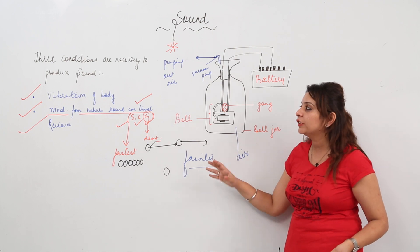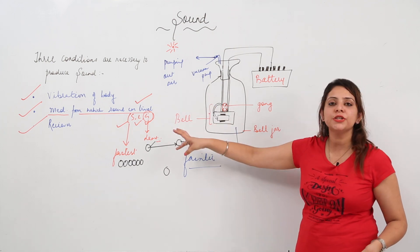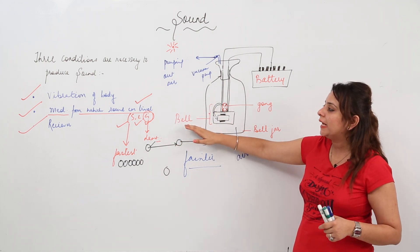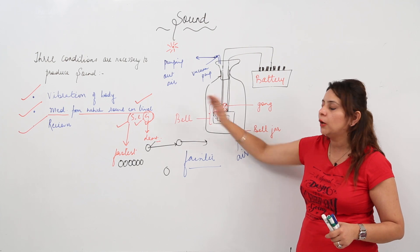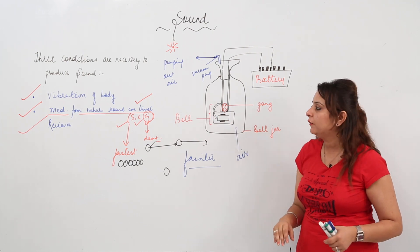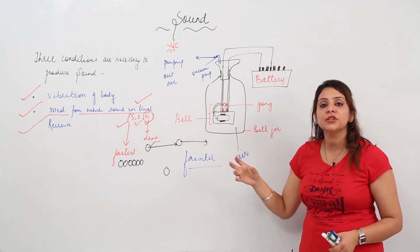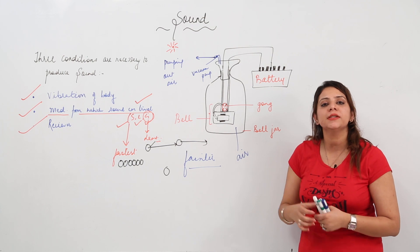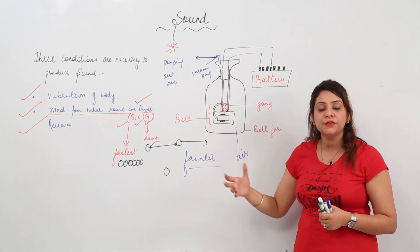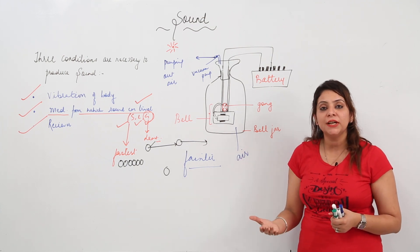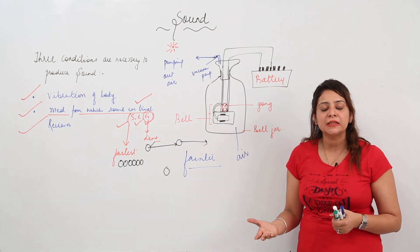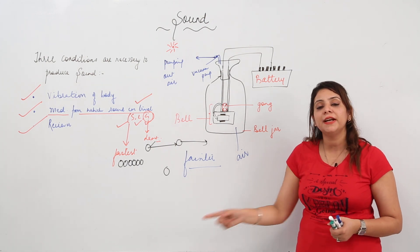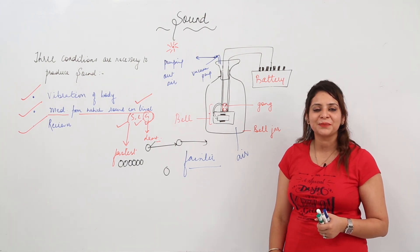Sound travels faster in solids compared to gas because particles are more closely packed. So the three conditions to produce sound, how to show that sound needs a medium to travel, how speed varies across solid, liquid, and gas, and the railway track as a practical example — all of these have been covered.